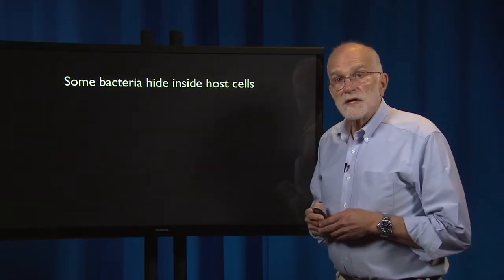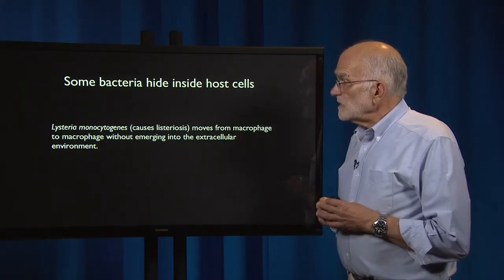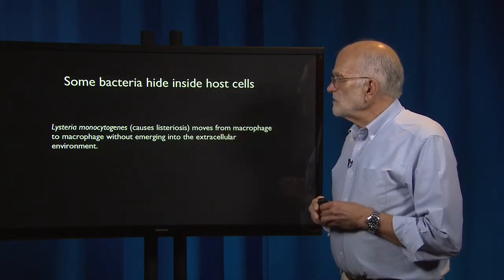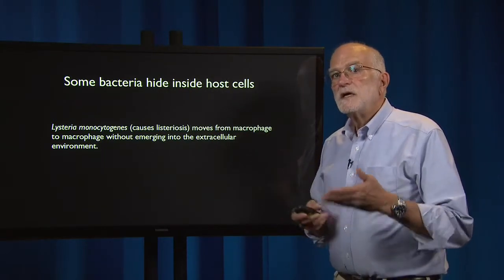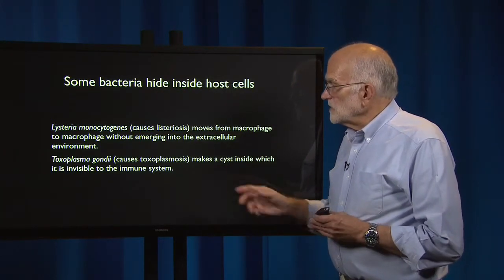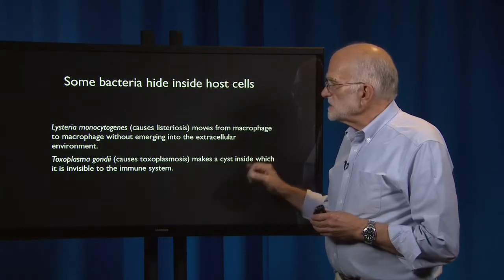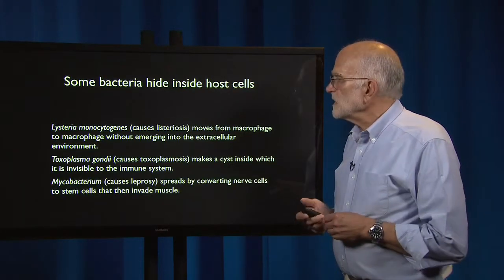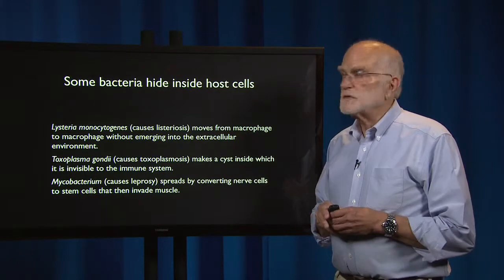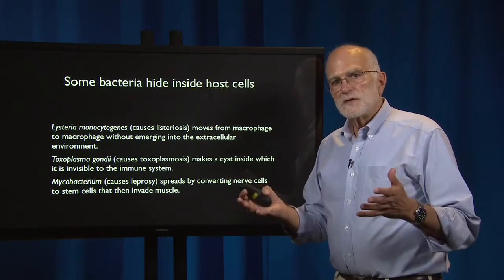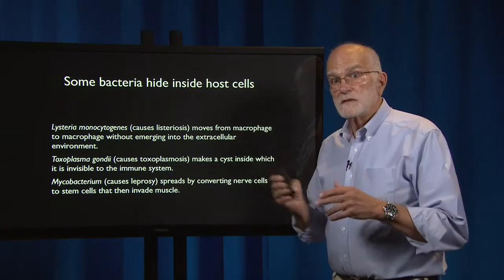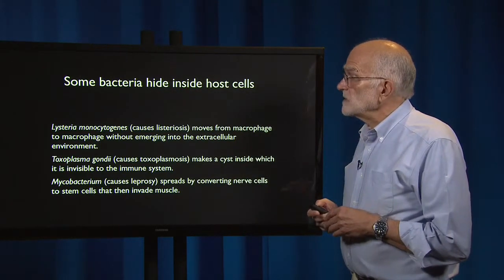Some bacteria hide inside host cells. For example, Listeria monocytogenes, which causes listeriosis, moves from macrophage to macrophage without emerging into the extracellular environment — hiding inside cells of the immune system. Toxoplasma gondii, which causes toxoplasmosis, makes a cyst inside which it's invisible to the immune system. Mycobacterium, which causes leprosy, spreads by converting nerve cells to stem cells that can then invade muscle. These are all ways bacteria stay away from humoral immunity — the antibodies and complement circulating in the blood.